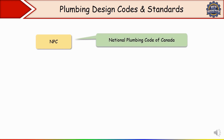Next we have NPC — National Plumbing Code of Canada, published by the National Research Council of Canada. This code is used in Canada, with the main purpose of setting regulations for safe plumbing system design and water conservation. Key provisions include water supply and backflow prevention standards, sanitary drainage and venting system requirements, and pipe insulation guidelines for cold climates.